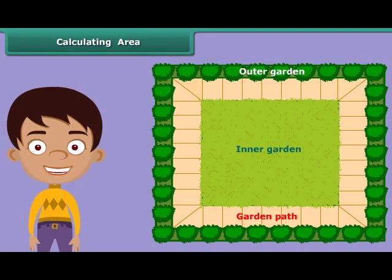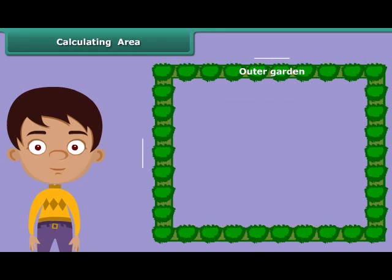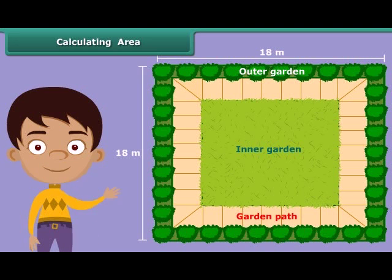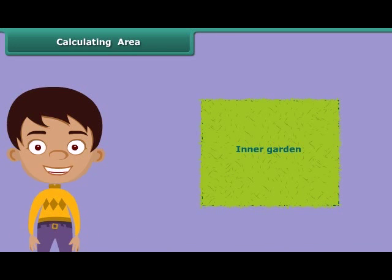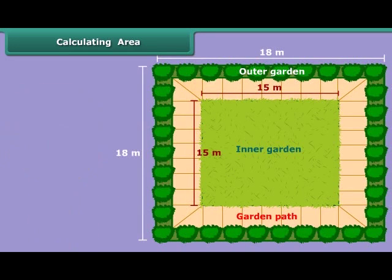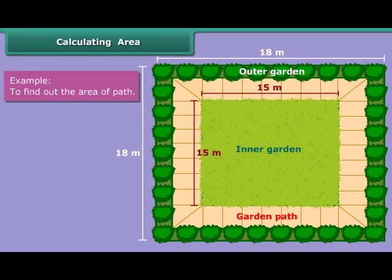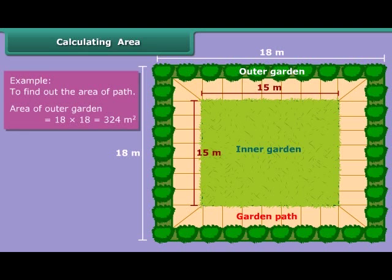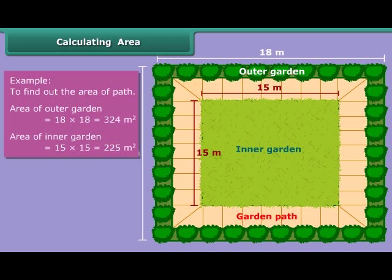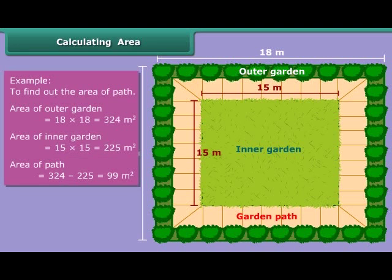Now let us advance a little further. Suppose there is a square garden of 18 meters and we want to make a provision for a path on all four sides. The inner garden, after the path is made, should be 15 meters. We want to find the area of the path. To do so, calculate and deduct the area of the inner garden from the area of the outer garden. The area of the outer garden is 324 square meters and the area of the inner garden is 225 square meters. So the area of the path will be 324 minus 225, which equals 99 square meters.